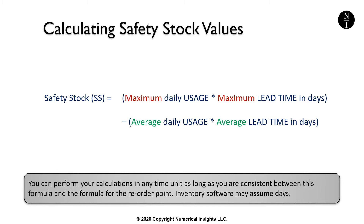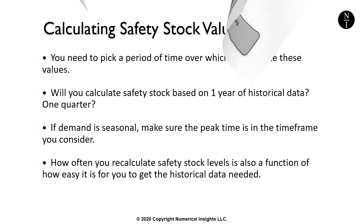Here's the formula. The safety stock equation takes into consideration what your peak daily usage was and what your average usage was. It also considers your longest lead time and your average lead time. These are all values which can be calculated, but you need to pick a period of time over which to calculate them. For example, you may choose to do safety stock calculations once a year and use one year of historical data to calculate daily usages and lead times.